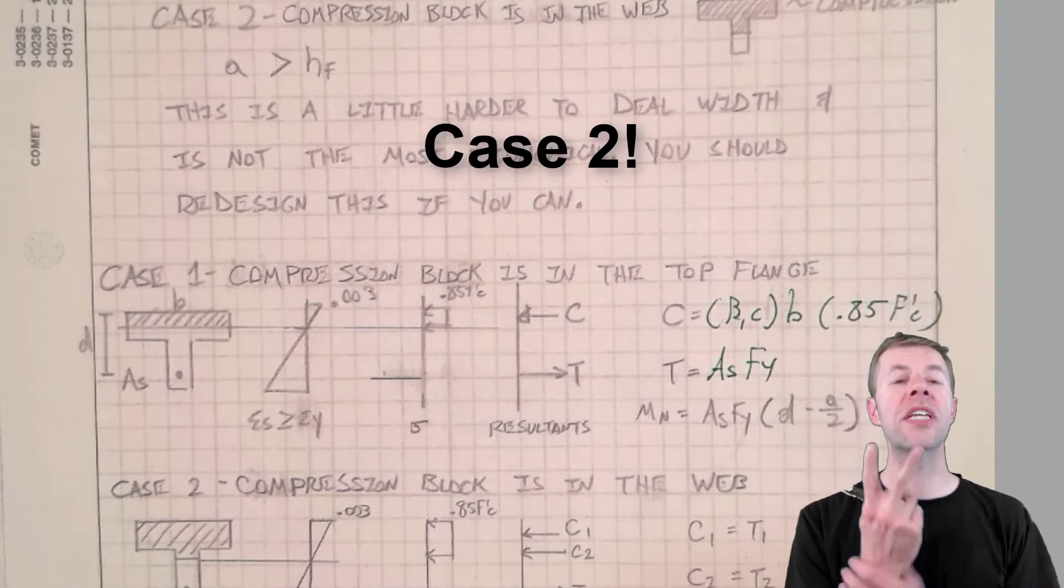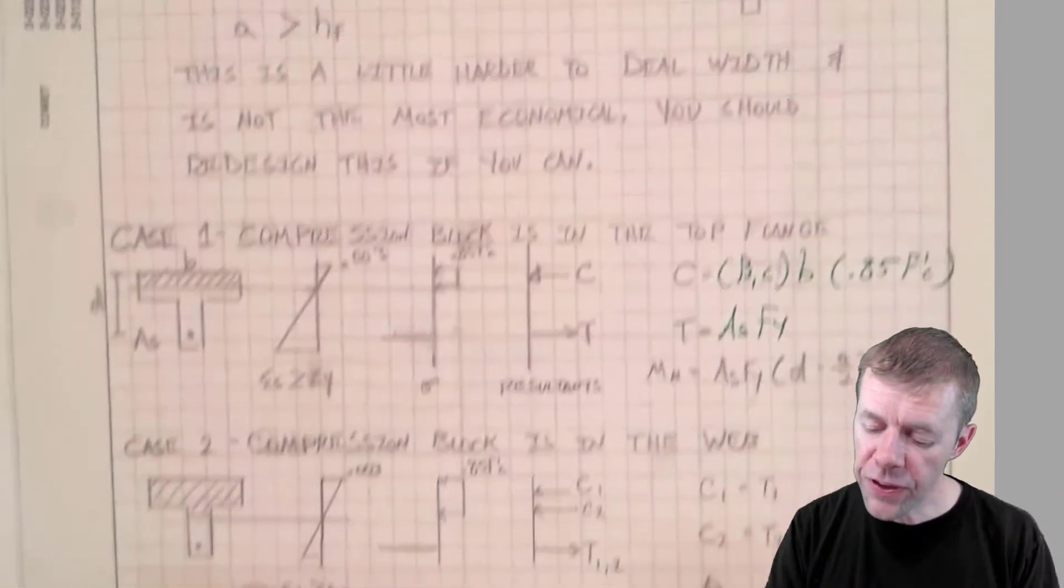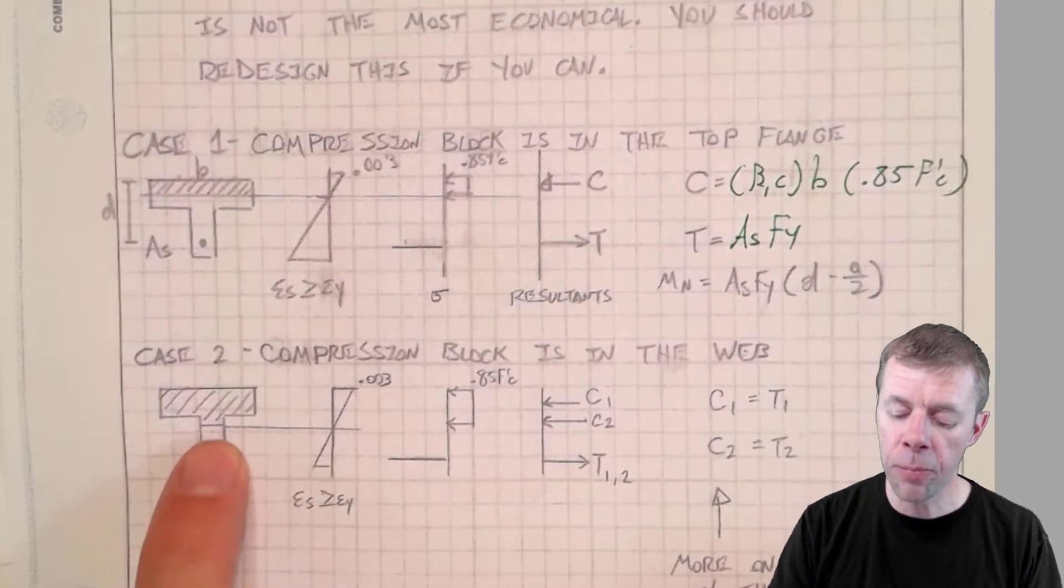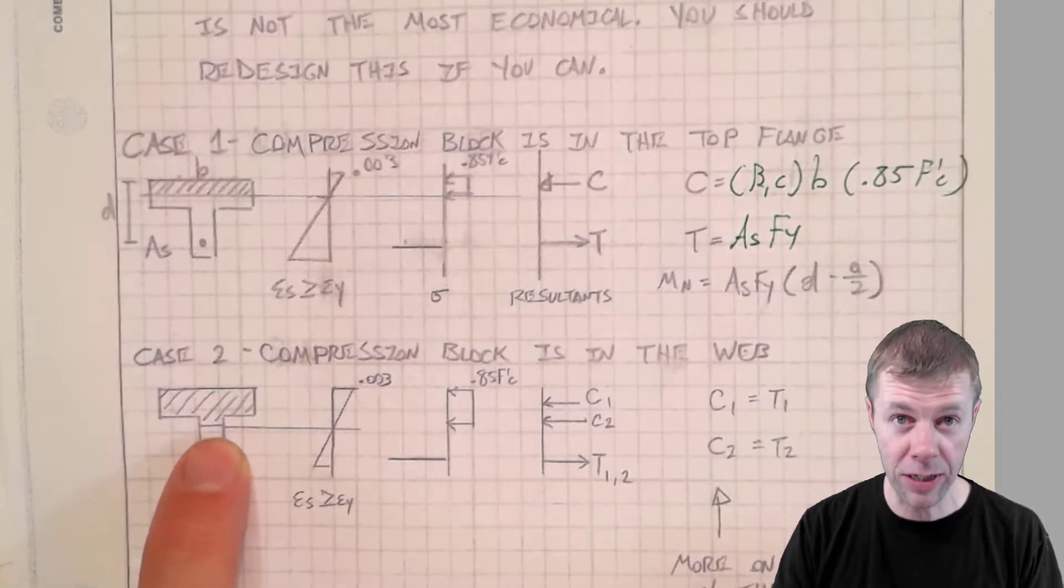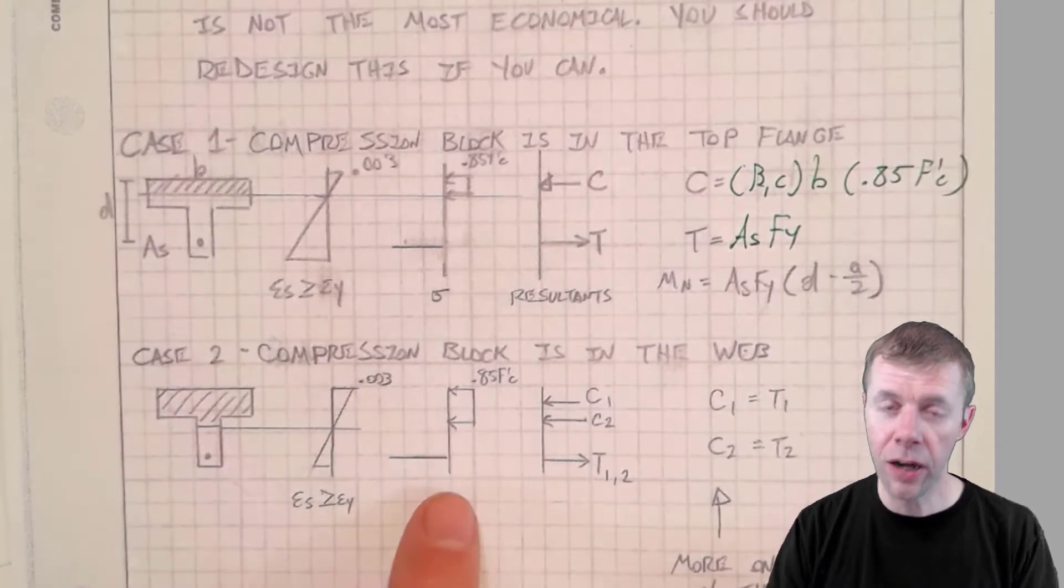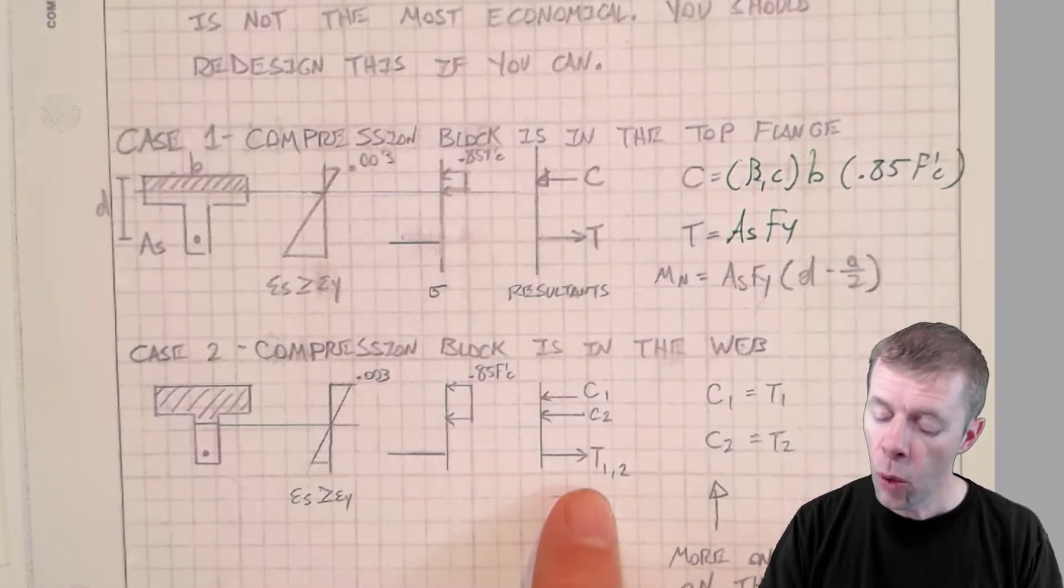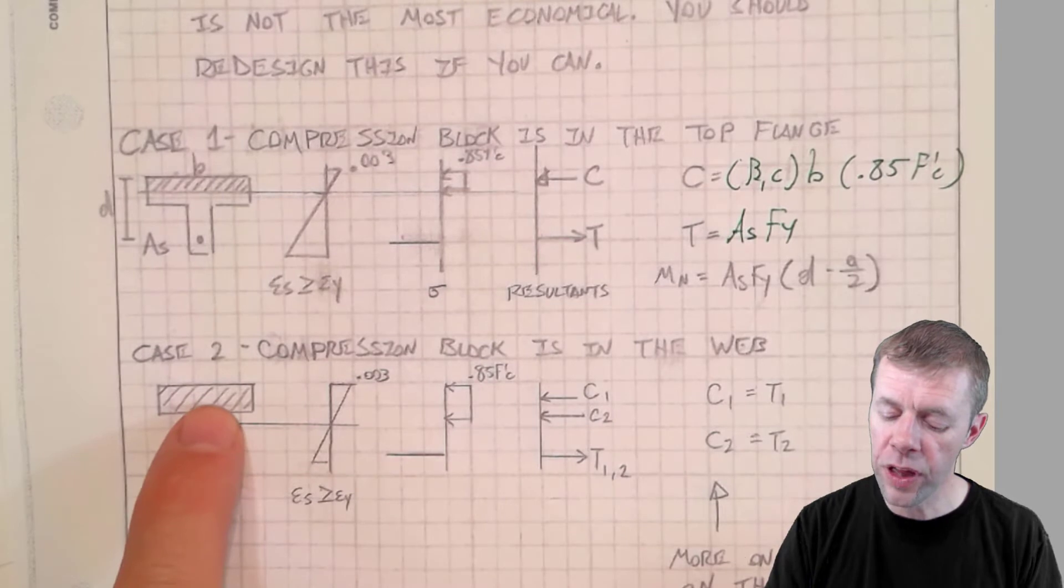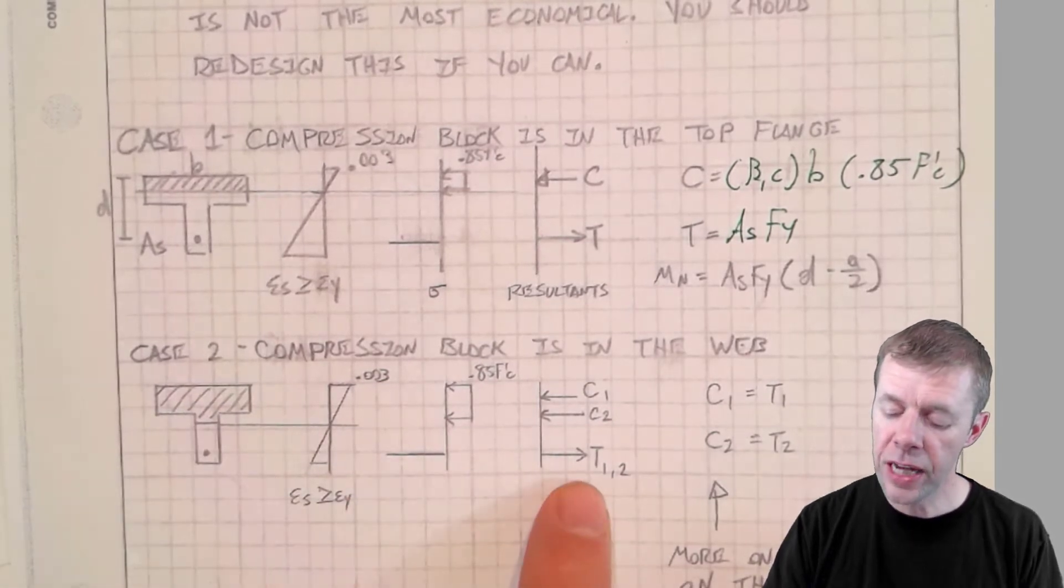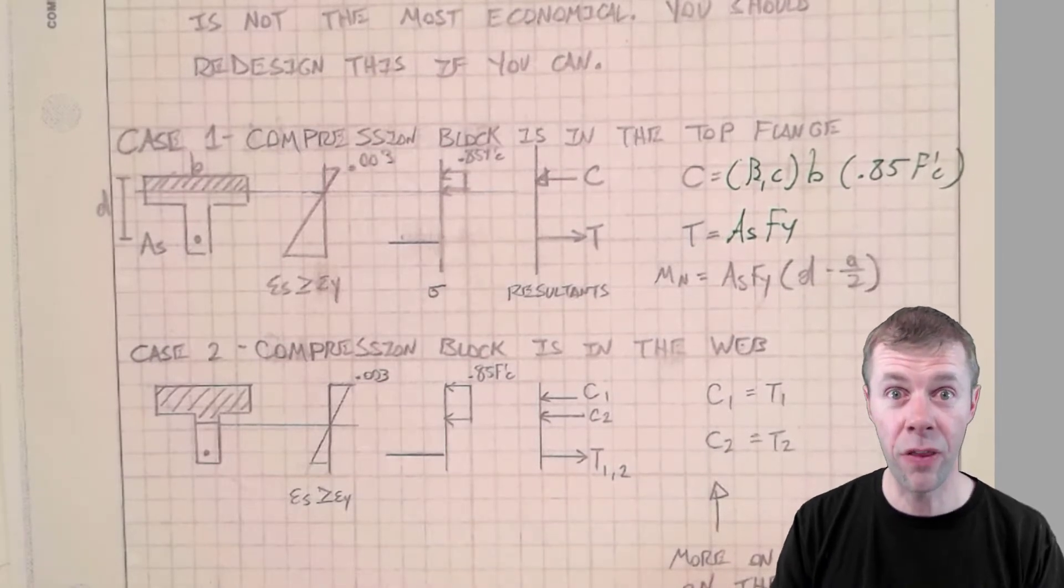But now let's go to case two. Let's get interesting. Let's get real. Now we've got this situation where we've got some of our compression block that has made it down inside the web. And our strain diagram still looks pretty similar, and our stress diagram still looks pretty similar, but now we have a different resultant. We've got a resultant for the flange, a resultant for that little bitty stuff down underneath it. We have this tension force at the bottom. We're going to set them equal, and I'll show you more about this on the next page.